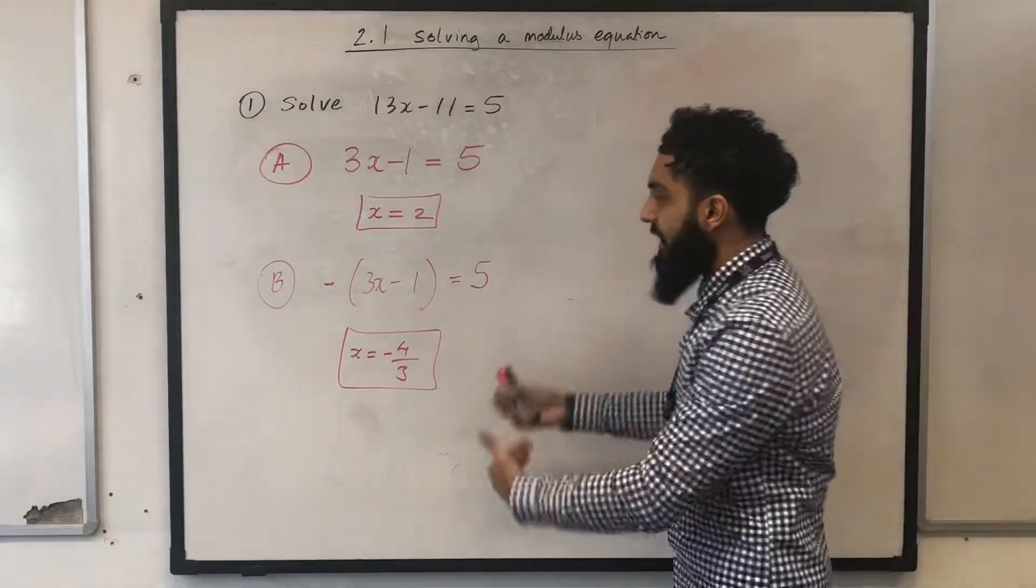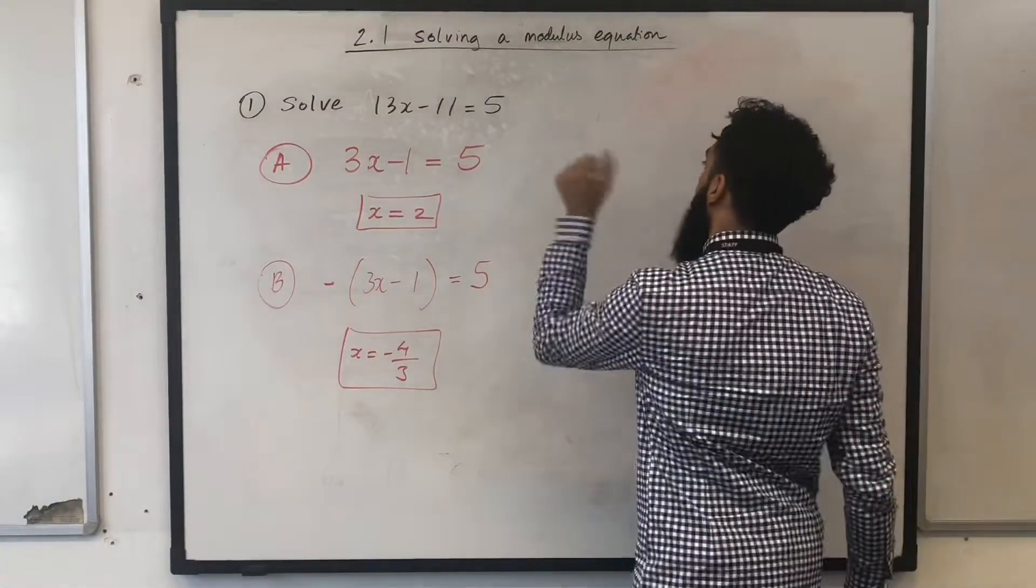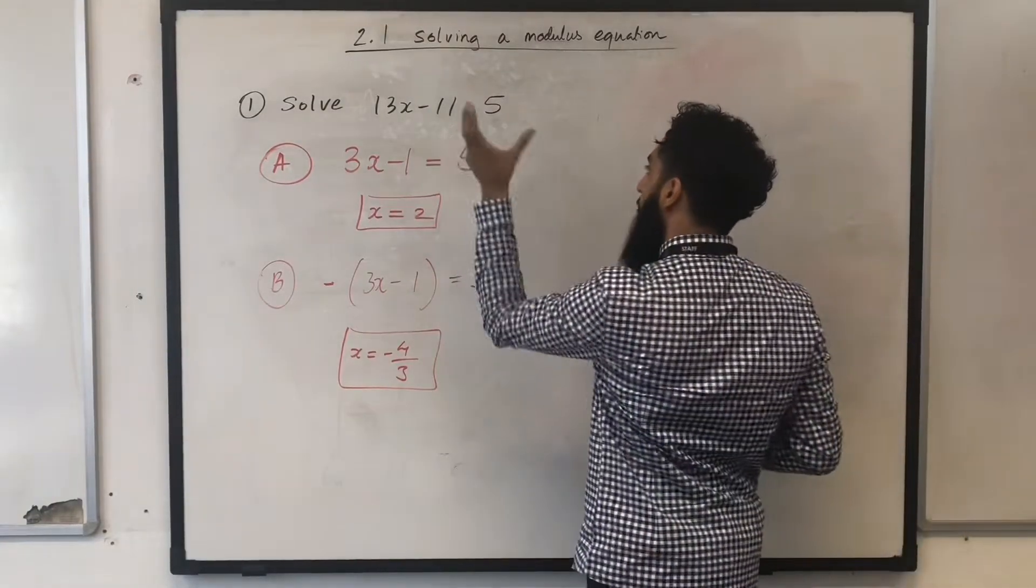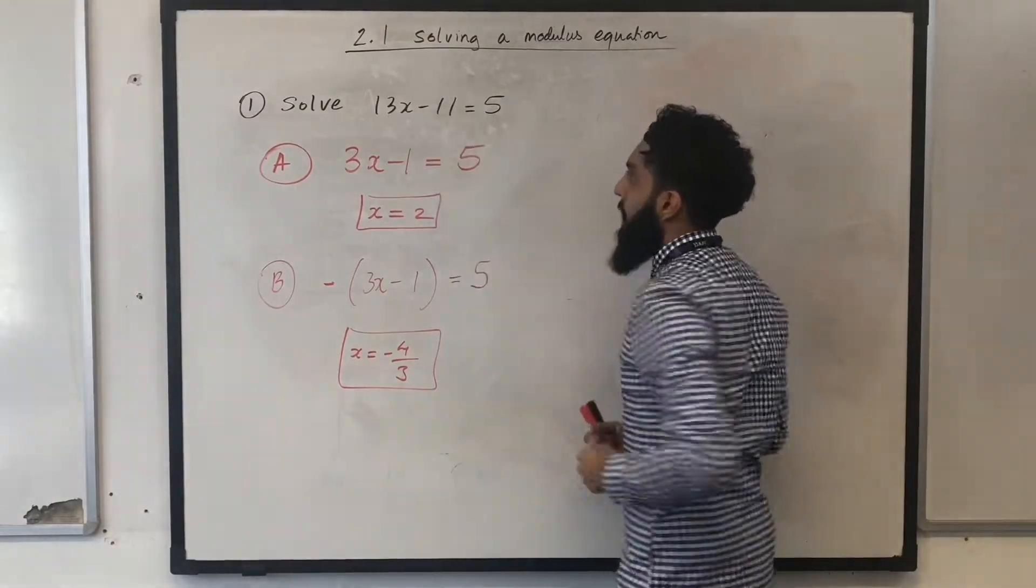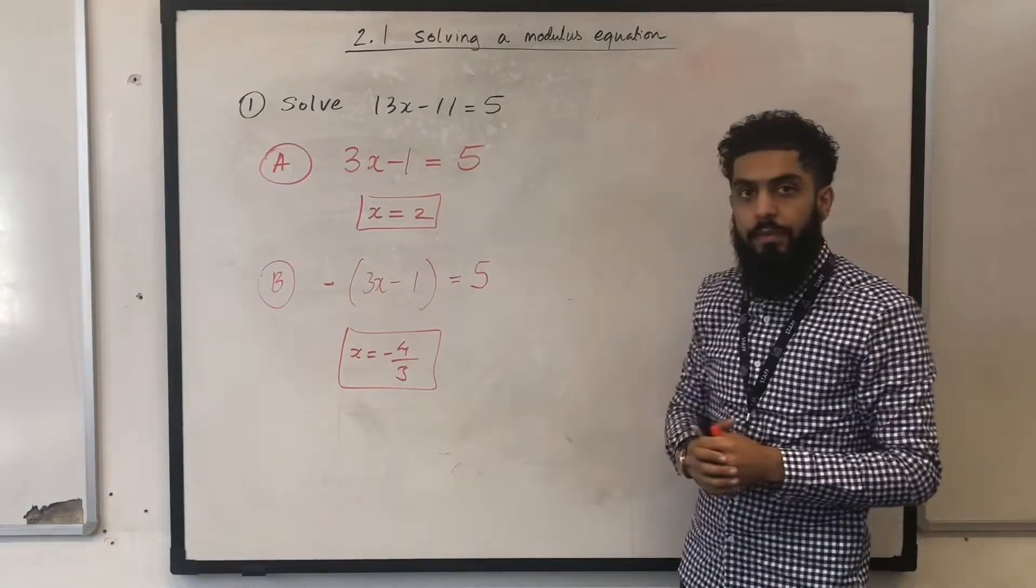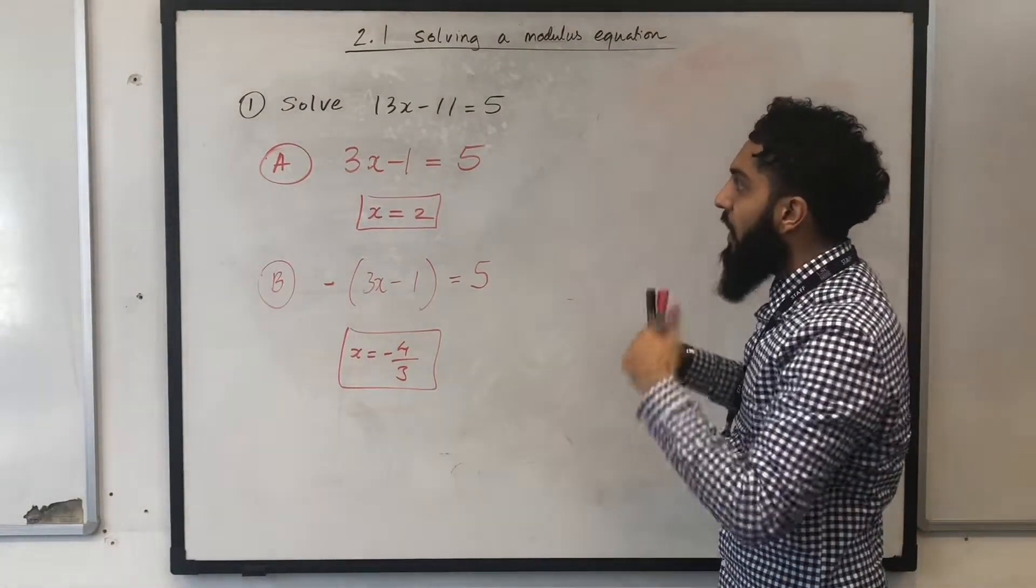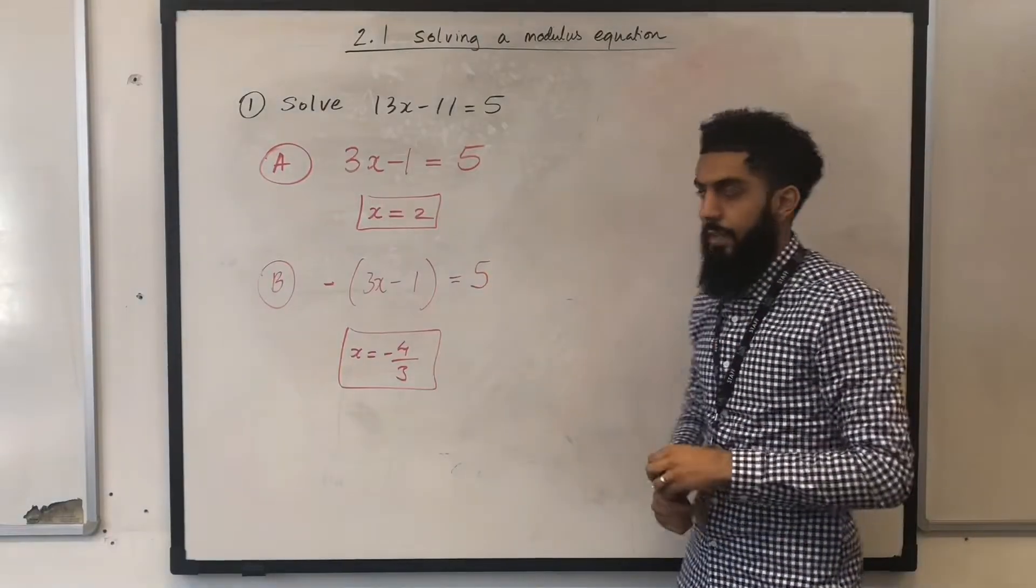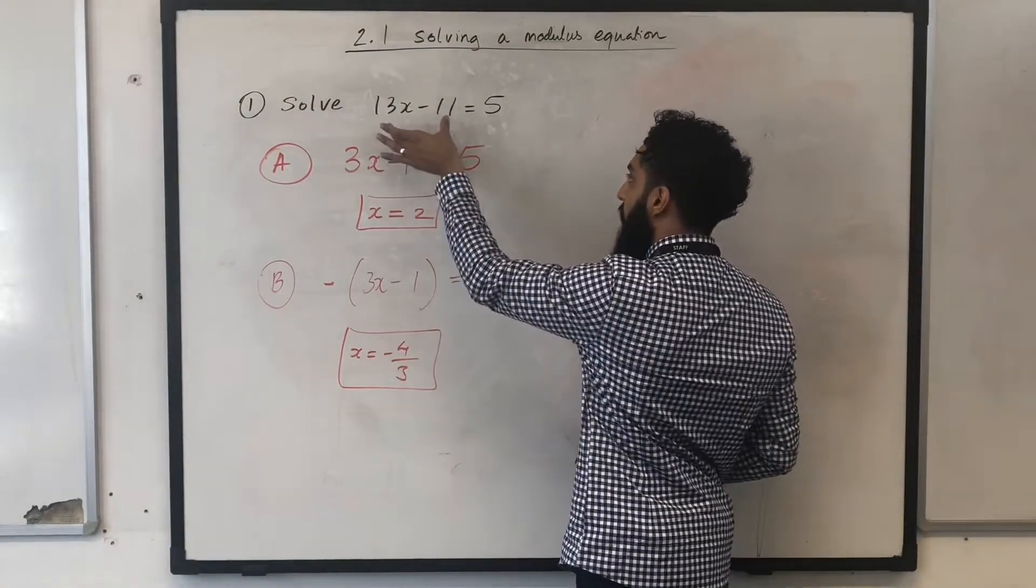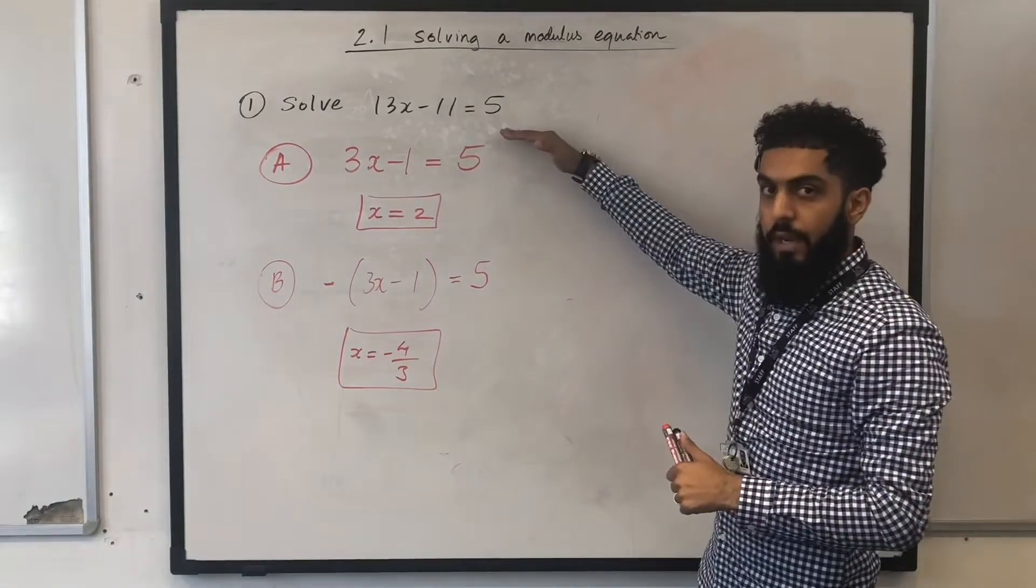Let's take a step back and think about what's happening graphically, geometrically. We've got the graph y equal to the modulus of 3x-1, and it's equal to the graph y equal 5. So, what we're looking at is a point of intersection. The intersection between the modulus graph y equal to the modulus of 3x-1, and the graph y equal to 5.